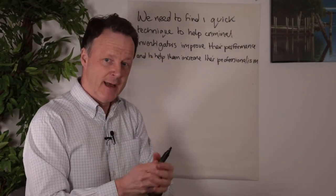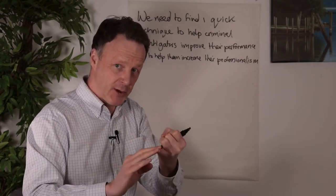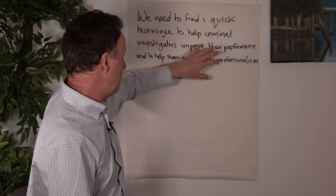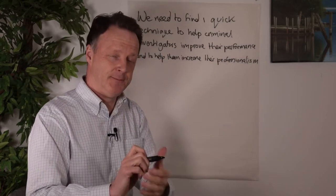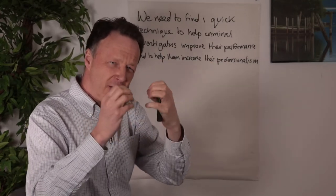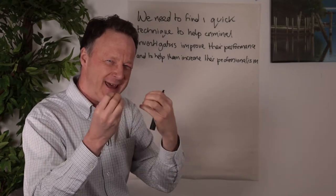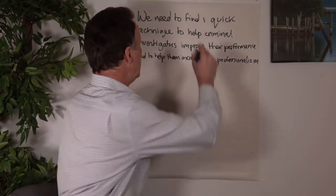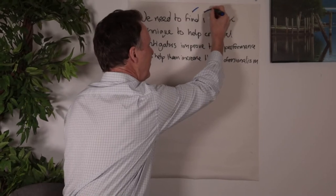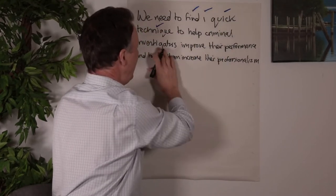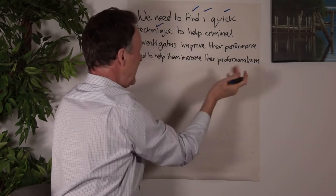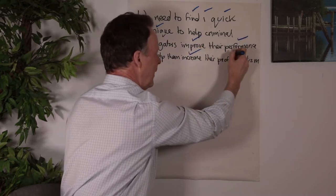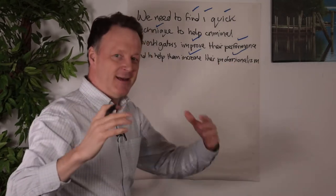Now, the first bit is deep filtering. So here's some information: we need to find one quick technique to help criminal investigators improve their performance and help them increase their professionalism. I want to know the language the person's using, but I also want to know all the key information. So this is where the deep filtering comes in, and there's a certain amount of professional judgment here. So here I would probably choose 'find,' I'd probably choose 'one,' I'd choose 'quick,' probably choose 'technique.' I don't need 'help criminal investigators' because I know that's basically what I'm talking about. 'Improve performance,' I'd keep that. I don't need any of this. And I'd increase that, capture that and that.